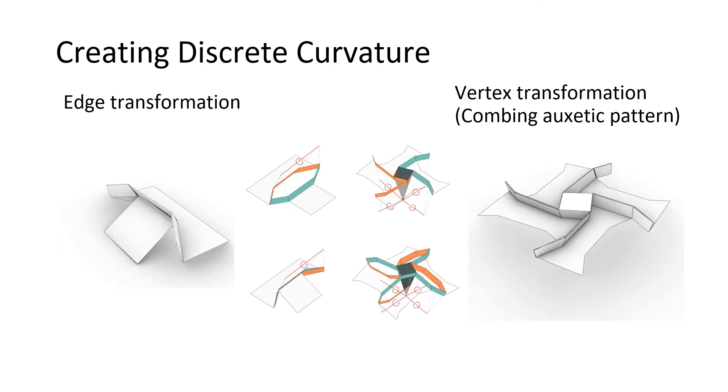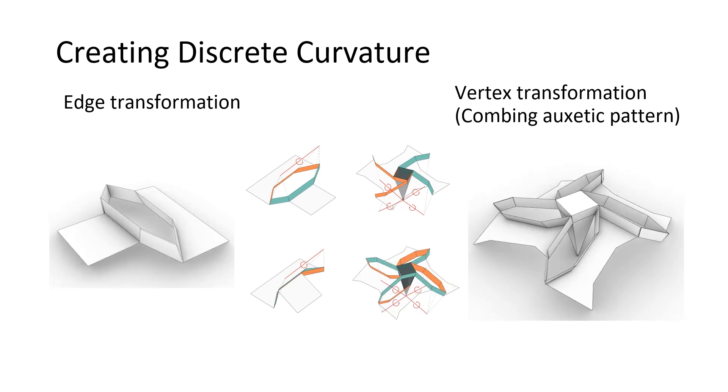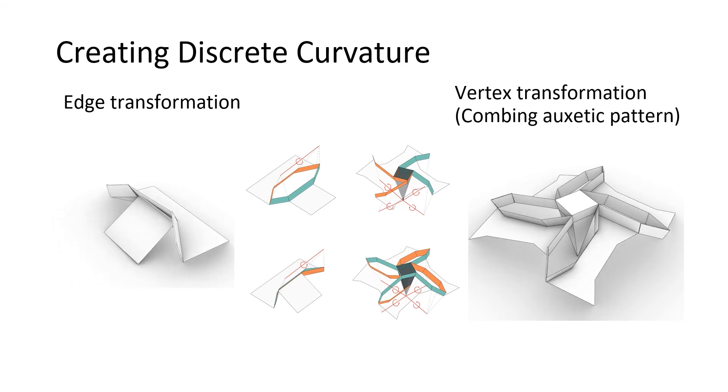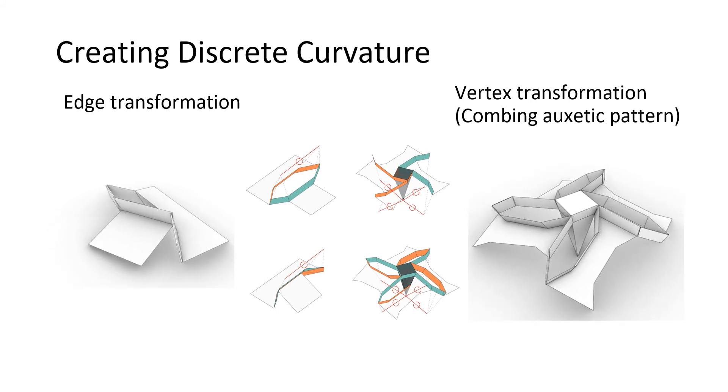When the discrete Gaussian curvature at one vertex is positive, all rotational axes can intersect at a point, forming a pyramid around the vertex.